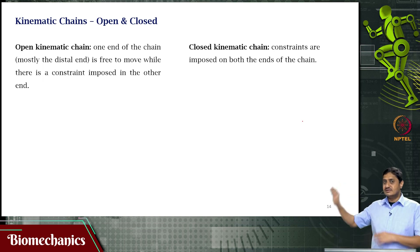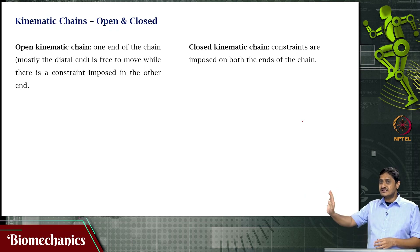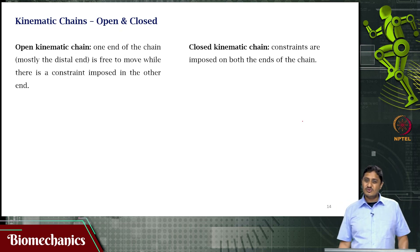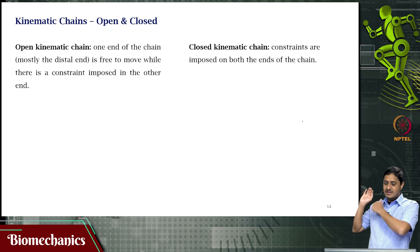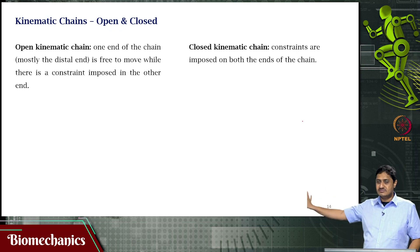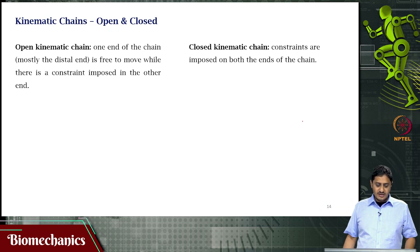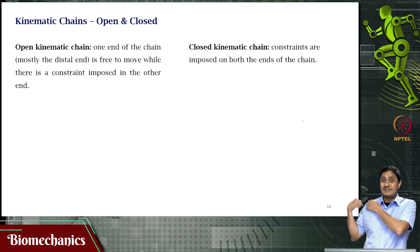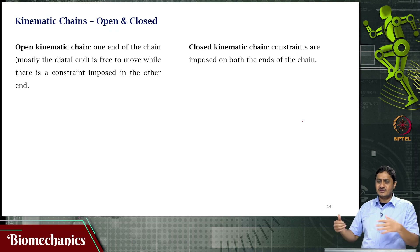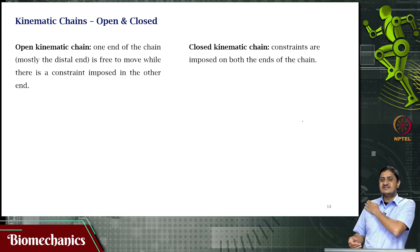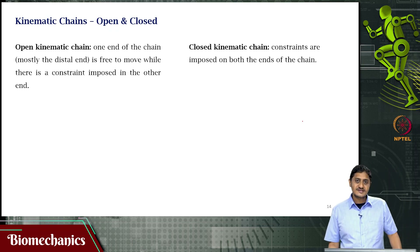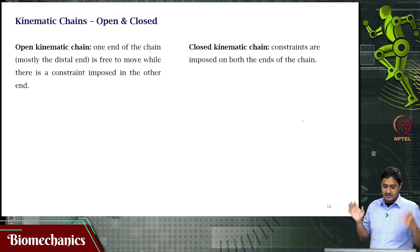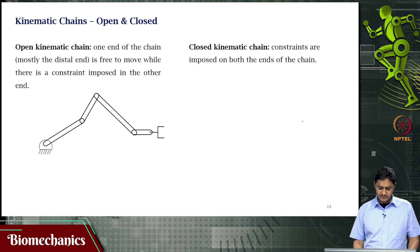The arm system can be considered an open kinematic chain, where the end effector is not attached to any particular body or point. One end of the chain — mostly the distal end — is free to move. Constraint is applied at the other end: the shoulder joint is fixed, which makes this a mechanism, with the shoulder serving as the ground to which the humerus is attached. Because the endpoint is open, this is an open kinematic chain.